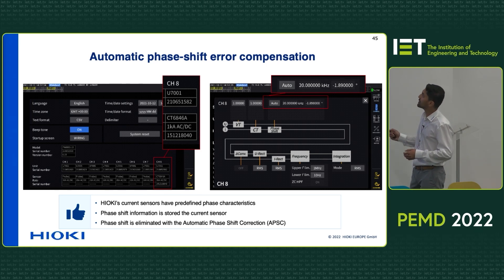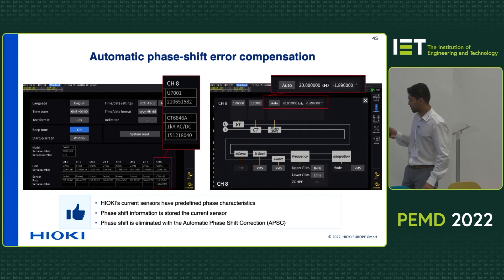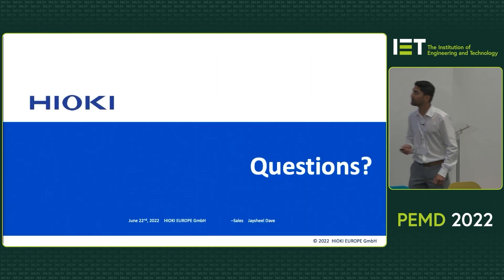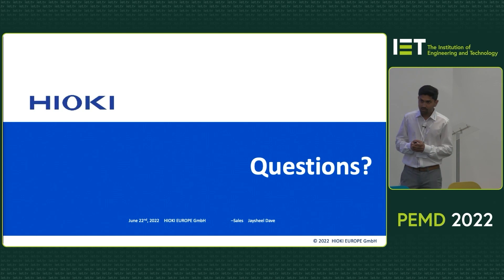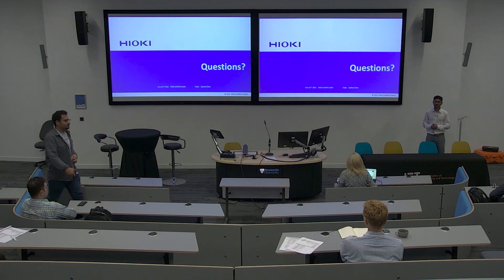For example, when a CT is connected and the power analyzer knows that at 20 kilohertz the phase delay is 1.89 degrees, the power analyzer reads it directly and compensates it automatically. Thank you for your attention — if you have any questions, you can ask me.